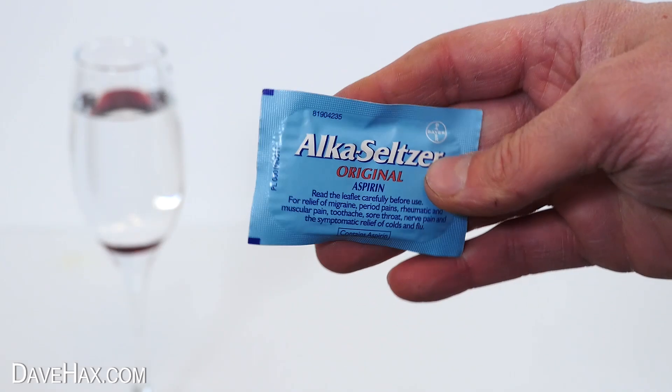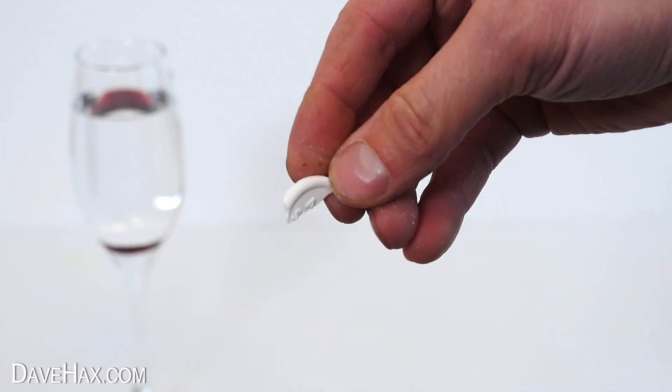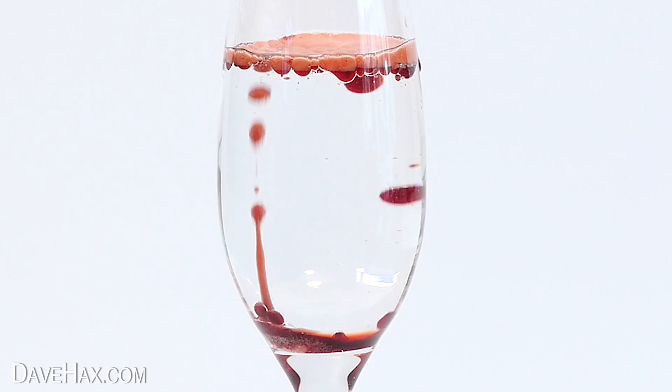To activate it I'm using an Alka-Seltzer tablet. I took one out and snapped off just a little bit. Drop it in the glass and watch what happens. It doesn't take long before the coloured liquid starts rising to the top. Then it drops back down to the bottom in a kind of cycle.